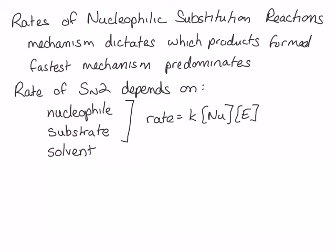As we've previously discussed, the solvent affects the nucleophilicity of the nucleophile because of solvation, and so it should not be surprising that the solvent also affects the rate of an SN2 reaction. Now we'll take a closer look at how each of these — the nucleophile, the substrate, and the solvent — affect the rate of an SN2 reaction.